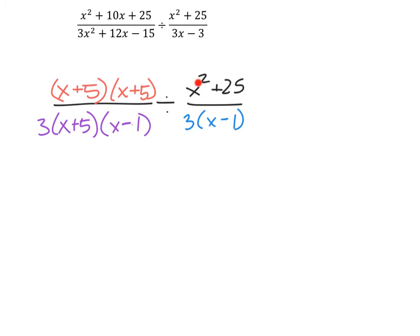And then this term stays the same, x squared plus 25, but from 3x minus 3, I factored out a 3, which gives us this blue term.